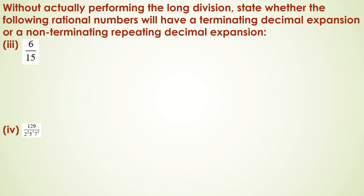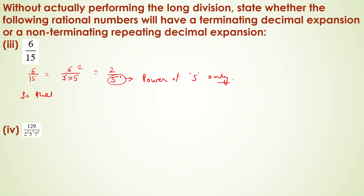Let us see two more examples: 6 by 15 and 129 upon 2 squared times 5 to the power 7 times 7 to the power 5. For 6 by 15, we simplify to 2 by 5. The denominator has a power of 5 only, so 6 by 15 has a terminating decimal expansion.